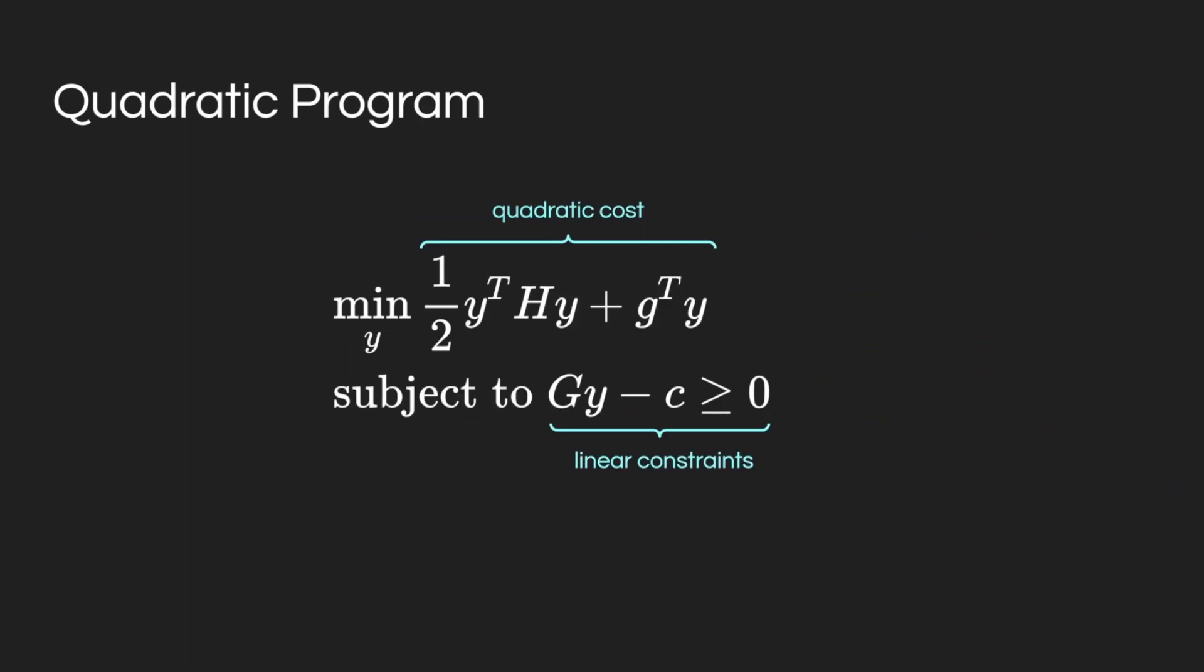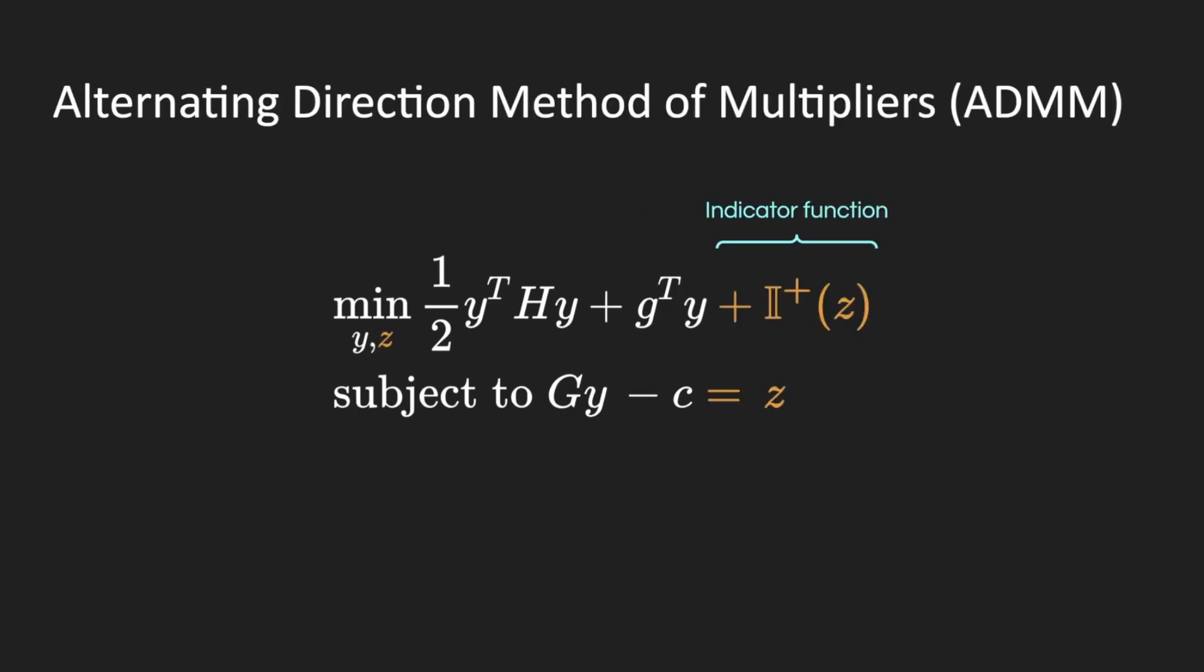ADMM starts with a QP like the one shown here, where we are minimizing a quadratic cost subject to linear constraints, and introduces a splitting variable z and an indicator function i, which is infinite when z is negative and zero otherwise.